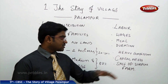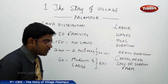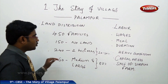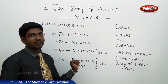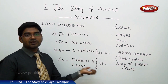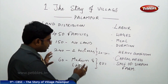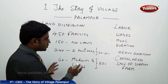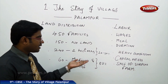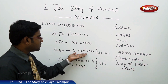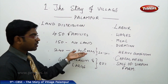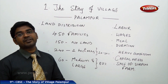Regarding the sale of surplus farm produce — only very few families have two acres of land. These 60 families hold the major amount of land, so surplus farm production is only possible for these 60 families. It is not possible for the rest of the people because their production is very less as their landholdings are very small.